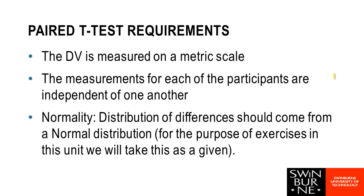We also assume that measurements for each participant are independent of one another. We know the before and after for a particular person are linked, but the height one person jumps shouldn't affect the height someone else jumps. The other assumption is that the underlying population distribution is a normal distribution — a bell curve, not too skewed. For our exercises and assignment, we're taking this as a given, so we're not going to get too caught up in checking this assumption.